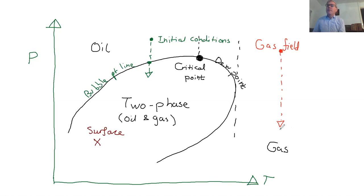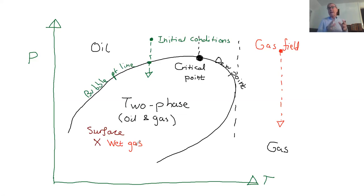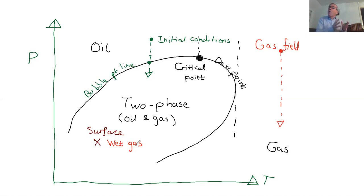What happens at the surface? We're colder there, so at the surface you do produce some liquid. That liquid oil you can sell — that's good news. If the surface conditions are still in the single-phase gas region, you produce only gas at the surface. This is called a wet gas — because when brought to the surface it produces liquid oil. And I emphasize: wet has nothing to do with water. In American English, 'wet' implies the presence of the liquid of interest.